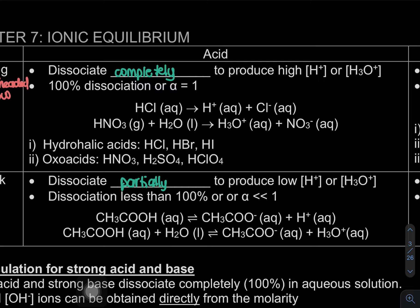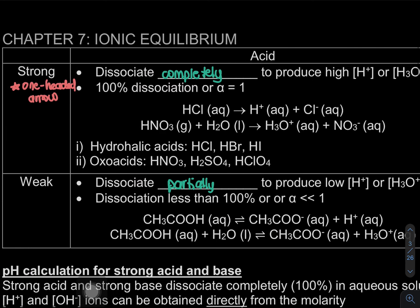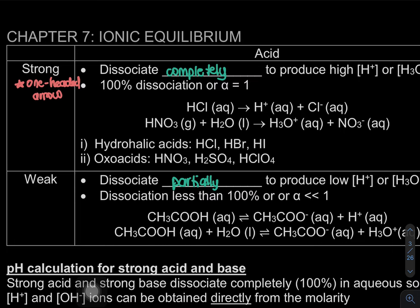For weak acid, the arrow is a reversible double-headed arrow, showing the reaction goes both ways. This applies to both weak acids and weak bases — they all use the reversible arrow. The single full-headed arrow is for strong (complete dissociation), while the reversible arrow indicates partial dissociation.